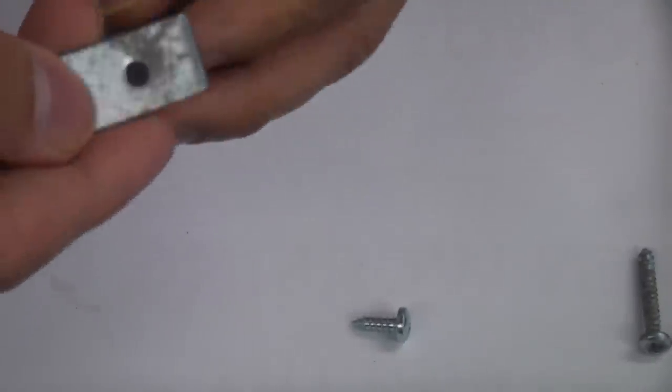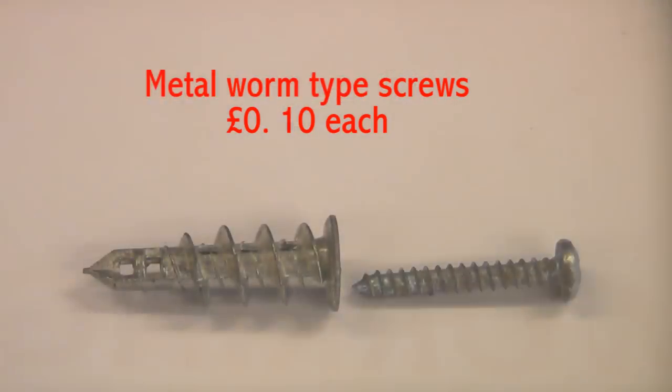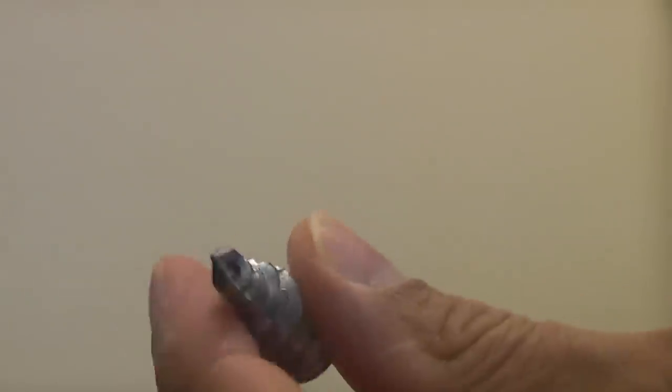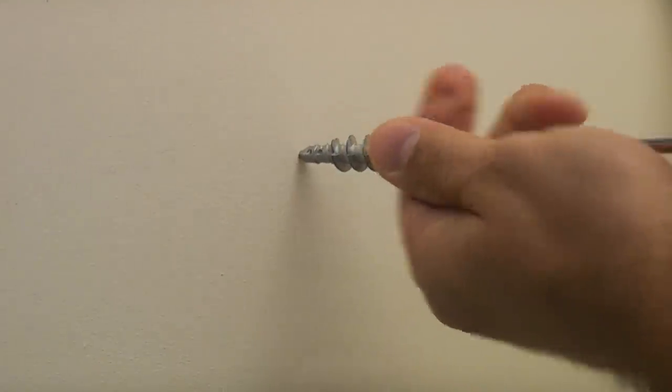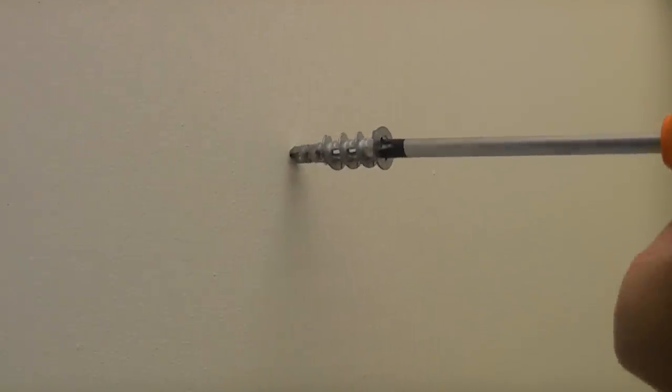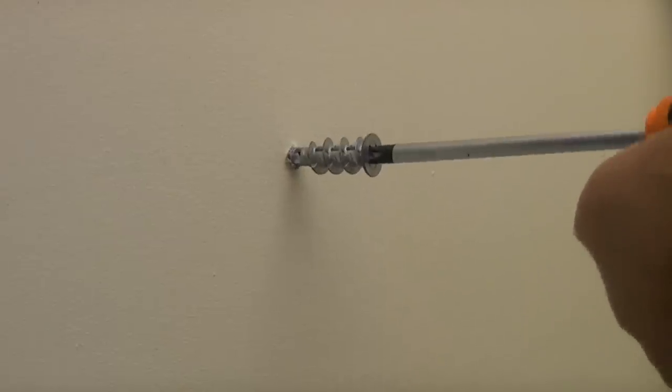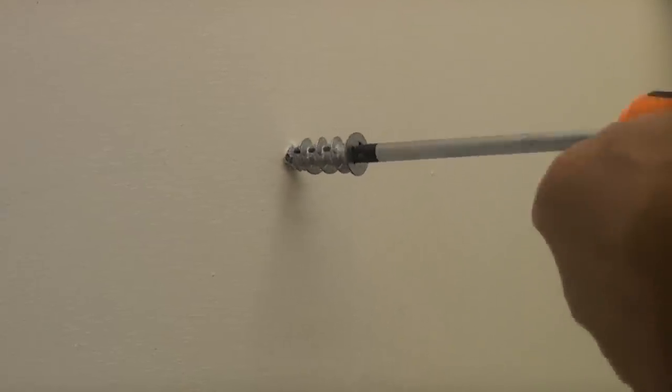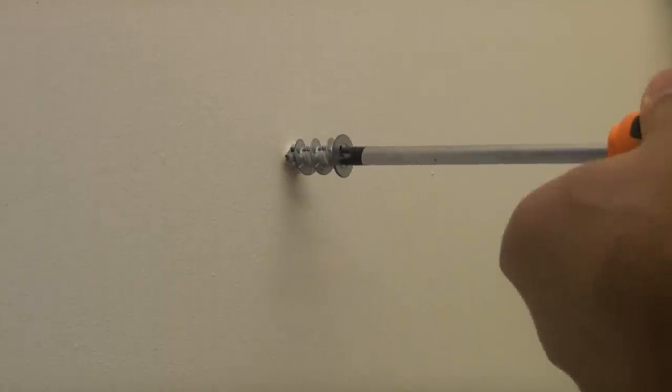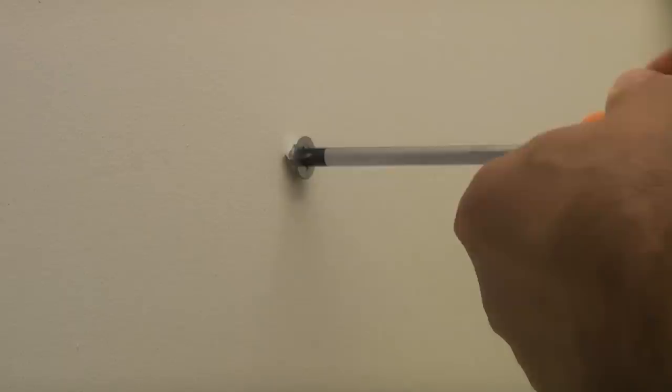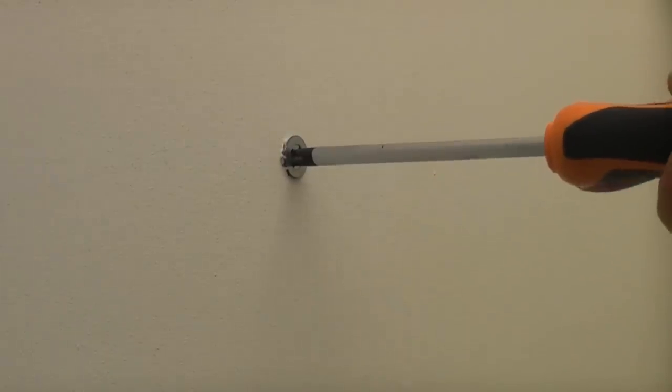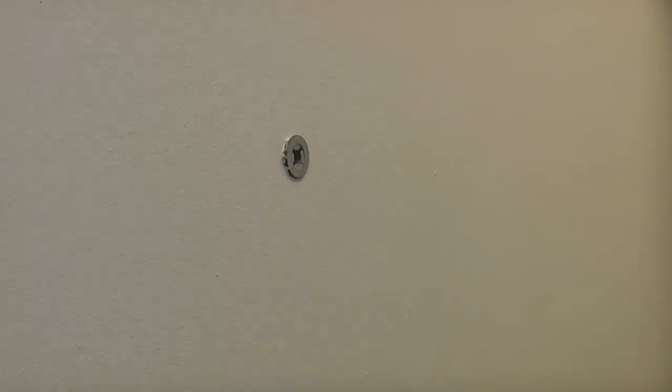So if you ever need to fix something thin like that to a plasterboard wall using a Ready Driver, it's critical that you buy a shorter self-tapping screw. These are very simple to use and you don't need a drill - you can simply screw them straight into the wall. It's important when you're using this that you actually apply some pressure to it when you're pushing it in, and that will actually create its own hole.